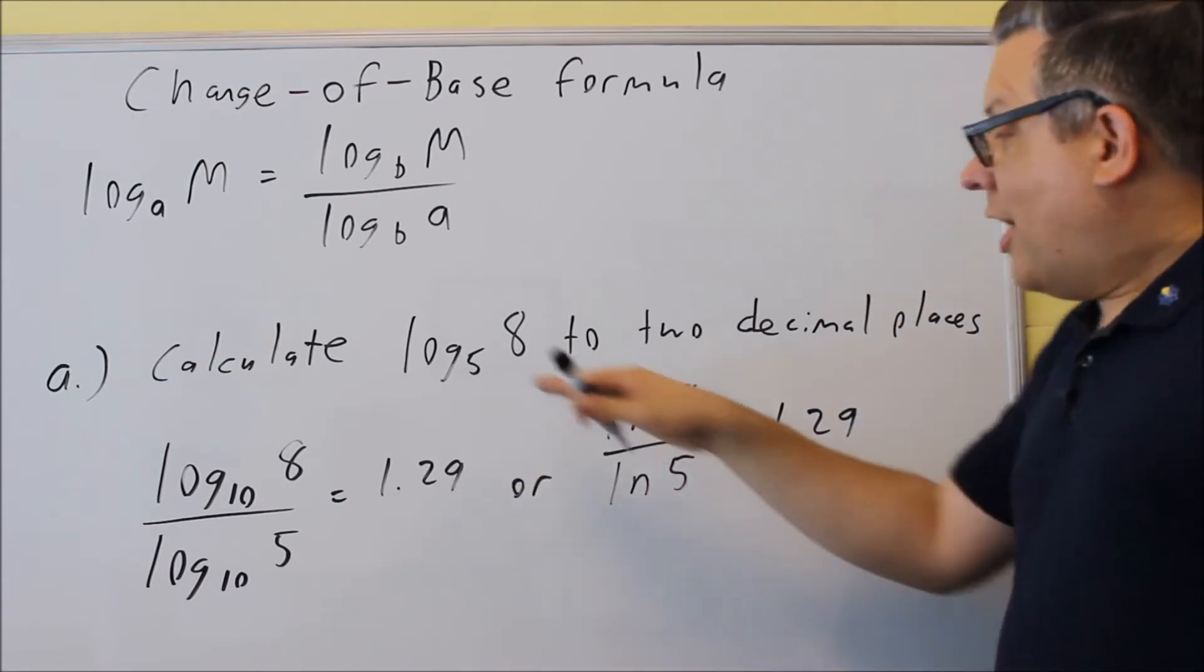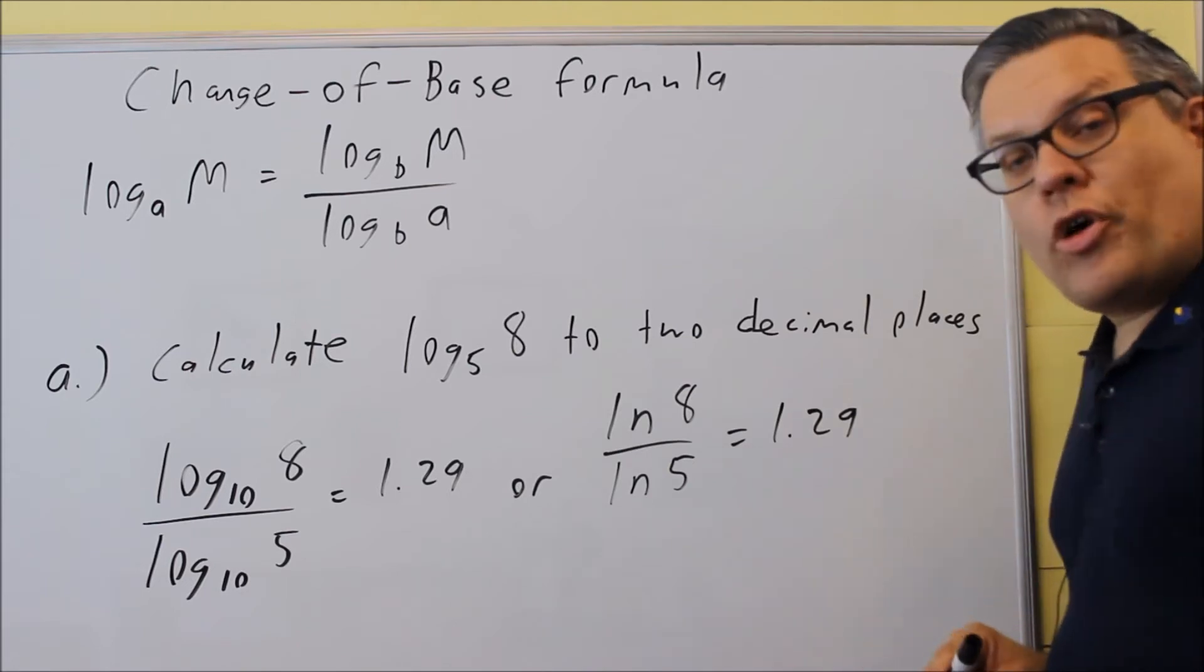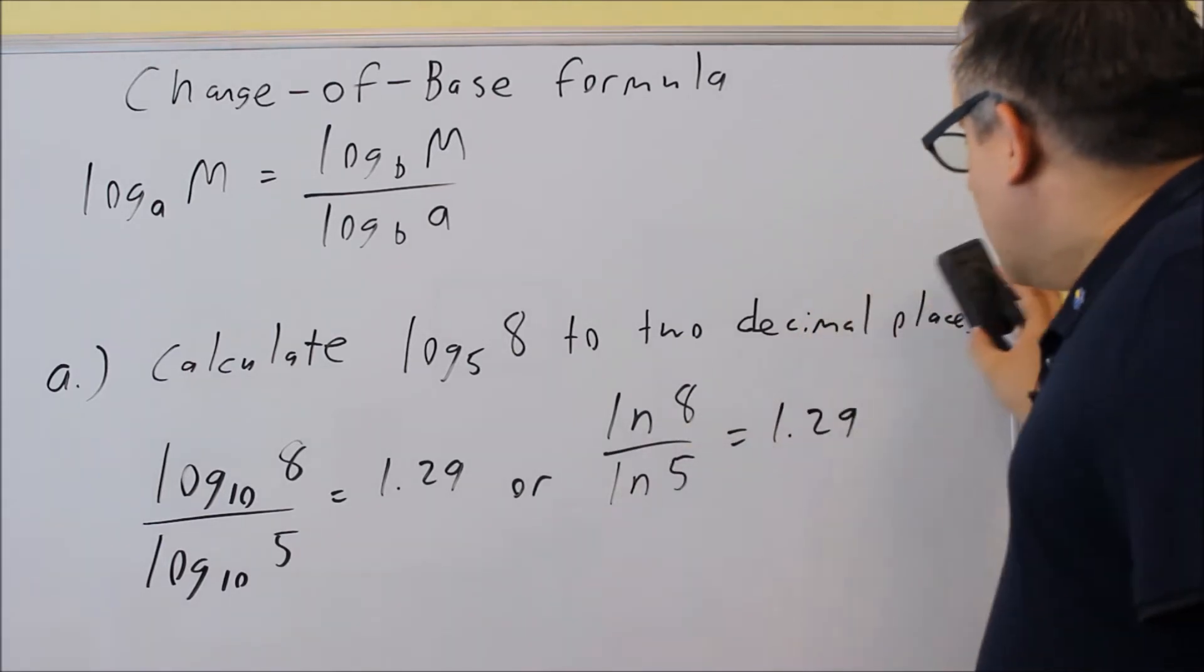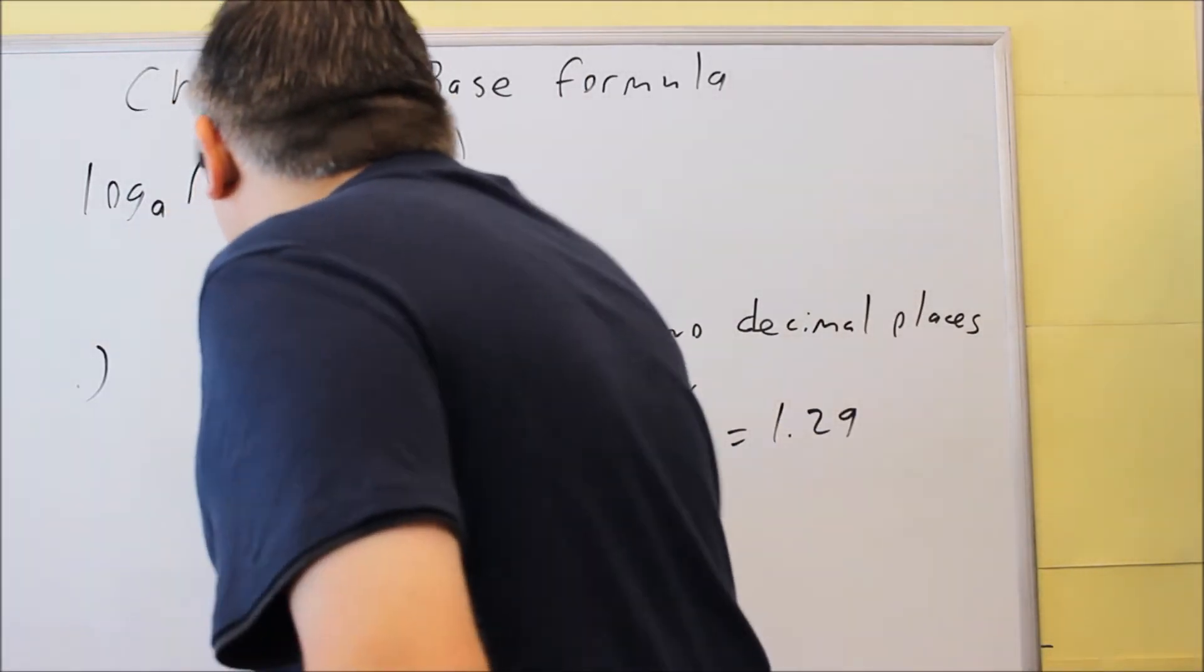But this would be your answer. Log base 5 of 8 rounded to two decimal places would be 1.29. Let's take a look at a part B here. So hopefully you have all this. Let me go ahead and put in part B on this one.